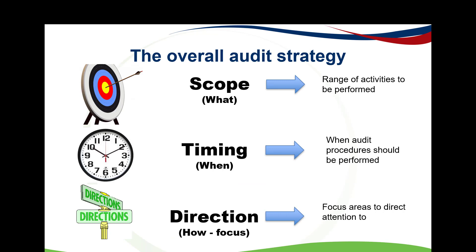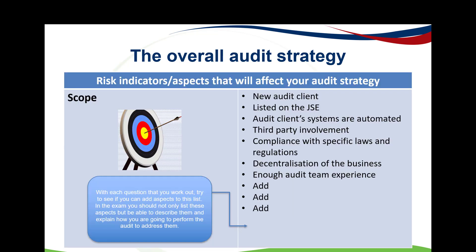If we look at the overall audit strategy, remember it consists of the scope, which is the 'what'; the timing, which is the 'when'; and the direction, which is the 'how' — the focus of your audit. Your scope is the range of activities to be performed, your timing is when your audit procedures will be performed, and direction is the focus area that you will direct your attention to.